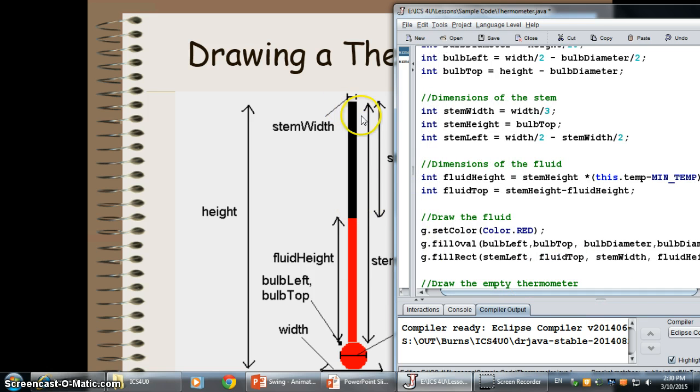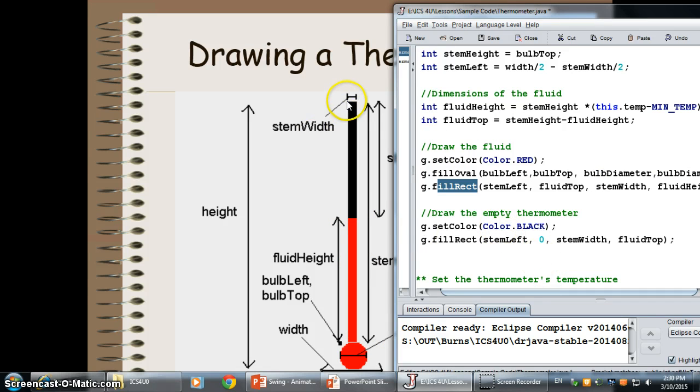The top of the fluid, the height of that, is the exact same as from the top to the top of where my fluid is here. So, that would be the top. And then I just have to draw it in using the values I had. I'm going to set my color to red, draw the oval, draw the fluid-filled portion. So, the left-hand side at the top of the fluid, the width, and the height of the fluid. And then the empty thermometer is black, going from the left-hand side, zero, the width of the fluid, to the top of the fluid.